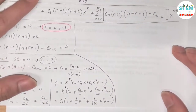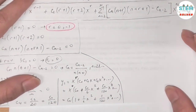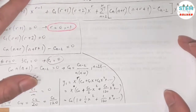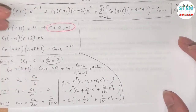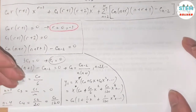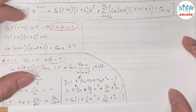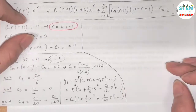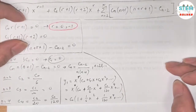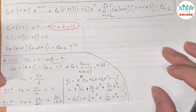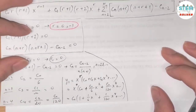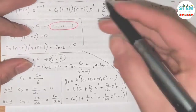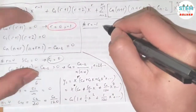Now do the same for r equals negative 1. The process is similar to what was done for r=0, so I'll work through it without repeating every step in detail.